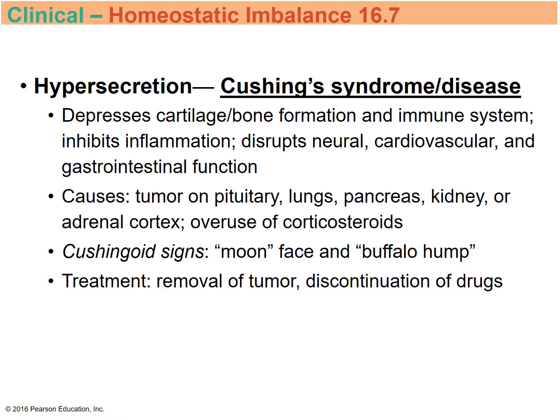Hypersecretion of glucocorticoids is known as Cushing's disease or Cushing's syndrome. It causes decreased bone and cartilage formation, depresses the immune system, inhibits the inflammatory response, and has effects on the nervous, cardiovascular, and gastrointestinal systems. Causes can include tumors. Signs include a moon face and a buffalo hump — a bulge between the shoulder blades. Treatment is removal of the tumor.